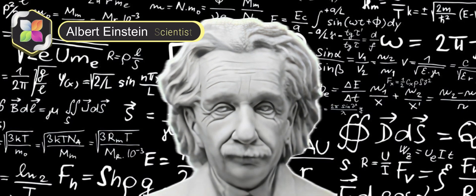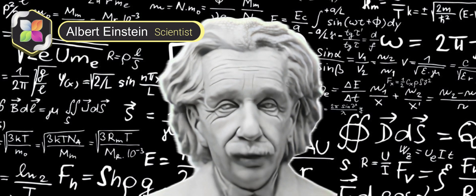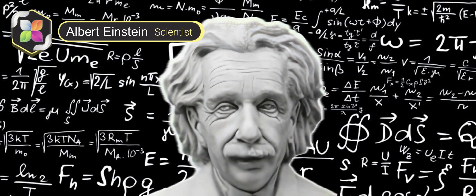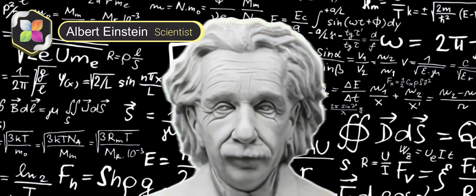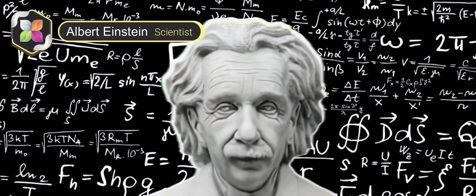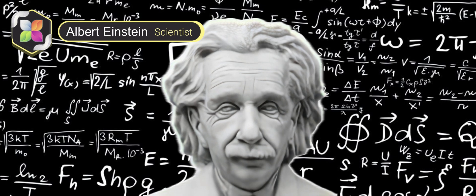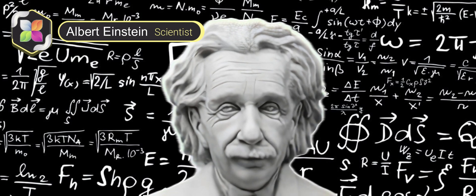I am Albert Einstein, born in 1879 in Ulm, Germany. I am a physicist who developed the special and general theories of relativity and won the Nobel Prize for my explanation of the photoelectric effect. I am considered the most influential physicist of the 20th century.